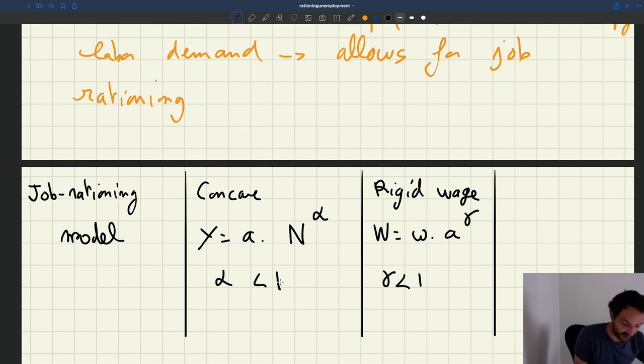The job rationing model is essentially the model that we've been using so far, which is the most general of this model. It allows for concave production function and rigid wages.